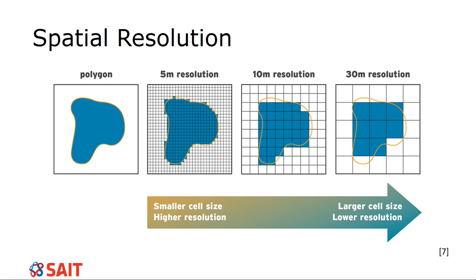If I have one meter resolution, is that sufficient to summarize what's on that table? Or do I need to go down to 10 centimeters? If you draw out a little 10 centimeter box all the way around your table, how much detail do you see now? Does it make sense to be at 10 centimeters or one meter? How much detail do you really care for? Because the higher the spatial resolution, the more money you're going to pay.